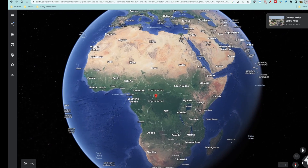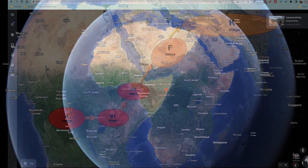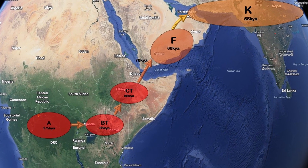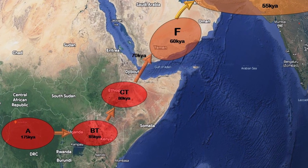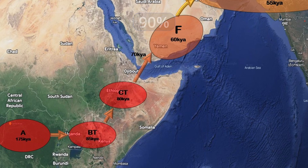The ancient path of the parent haplogroups before the emergence of the Q haplogroup originated in Central Africa with haplogroup A. This haplogroup underwent mutations and eventually gave rise to the Bt and Ct haplogroups, which left Africa around 70,000 years ago. Approximately 60,000 years ago, it further mutated into the F haplogroup on the Arabian Peninsula, where 90% of paternal lineages outside of Africa belong to subclades of this haplogroup.